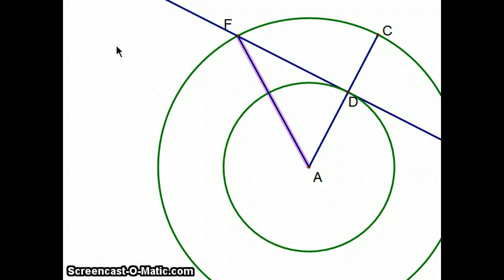And call the intersection of FA with the original circle H. And finally, I'm going to construct line HC. And Euclid claims now that HC is the line that we were trying to create, that it is a tangent to the circle and it does go through point C.